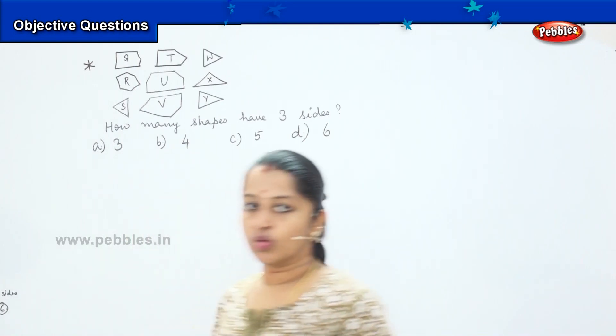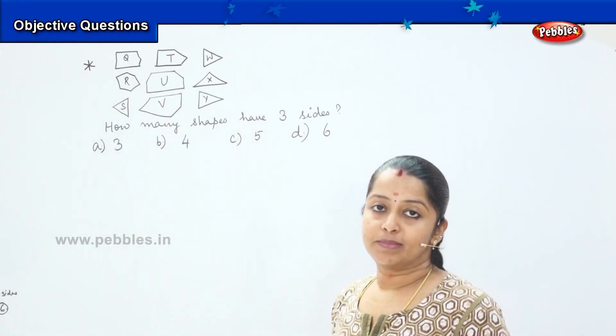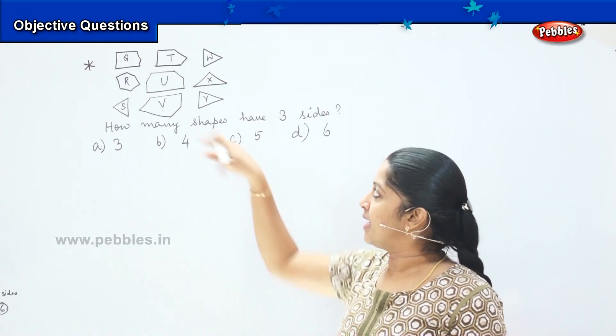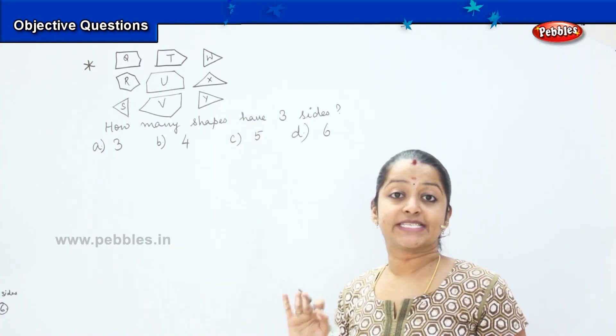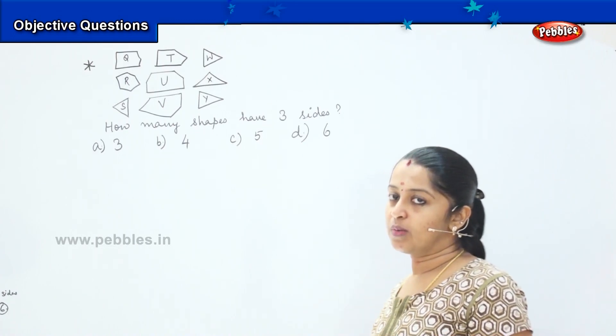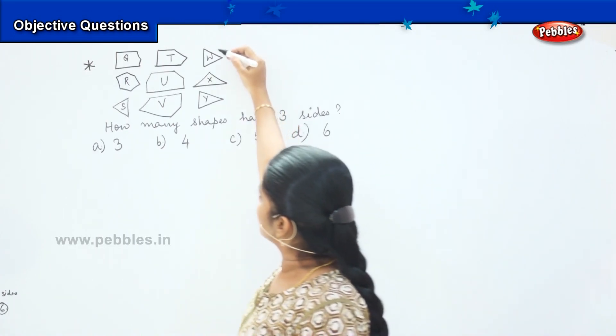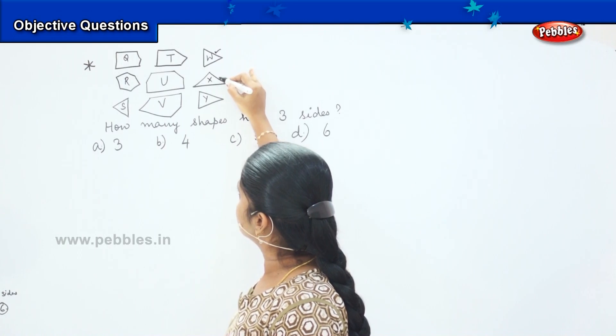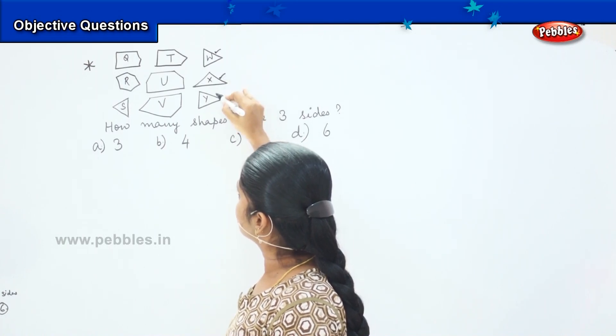So, you have to see the figures and tell me how many shapes among them are having three sides. Remember, three sides. So, shall we see? It's this one, first one. One, two, three.